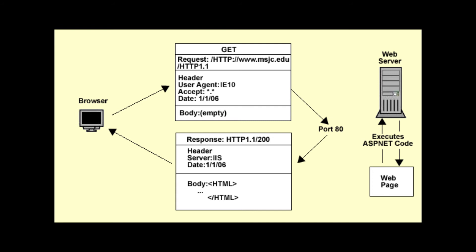An HTTP response is sent by the web server back to the client and consists of three pieces of information: one, the response line; two, the HTTP header; and three, the HTTP body.